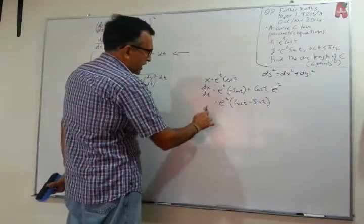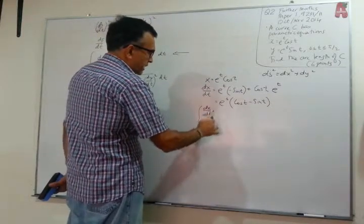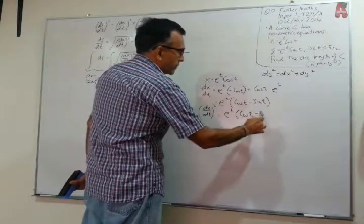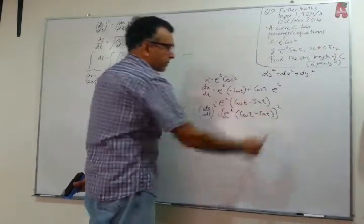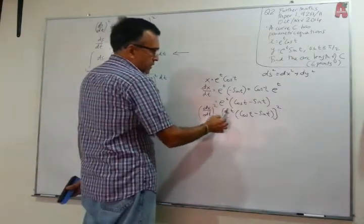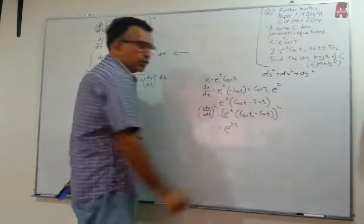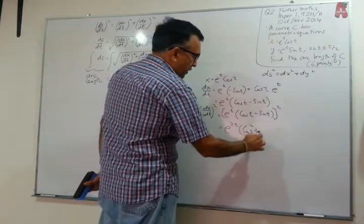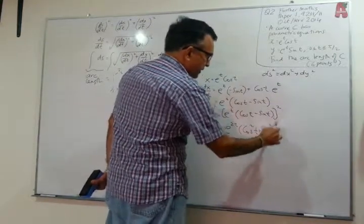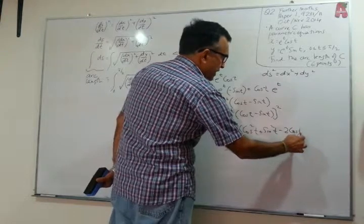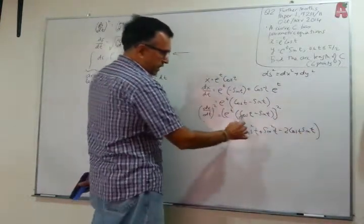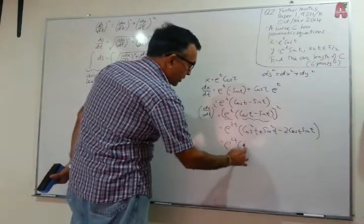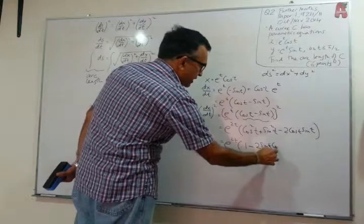Now we need (dx/dt)² so let's square it. e^t squared becomes e^(2t). Then (cos t − sin t)² expands as cos²t + sin²t − 2 cos t sin t. So (dx/dt)² = e^(2t) · (1 − 2 sin t cos t).